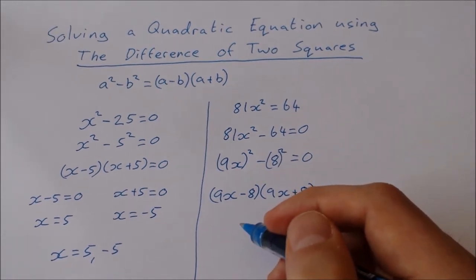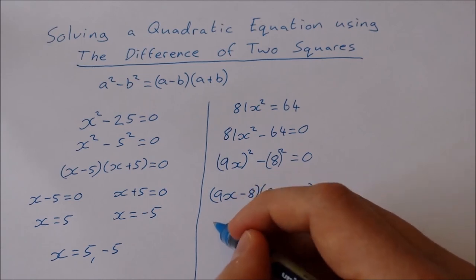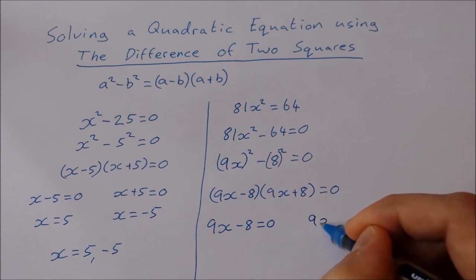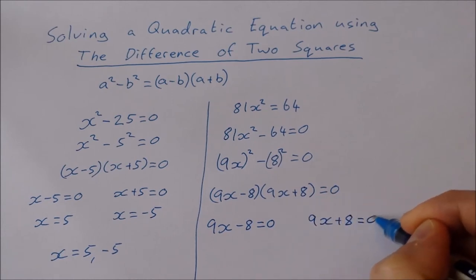Again, let each bracket equal 0 individually. So 9x minus 8 equals 0, and 9x plus 8 equals 0.